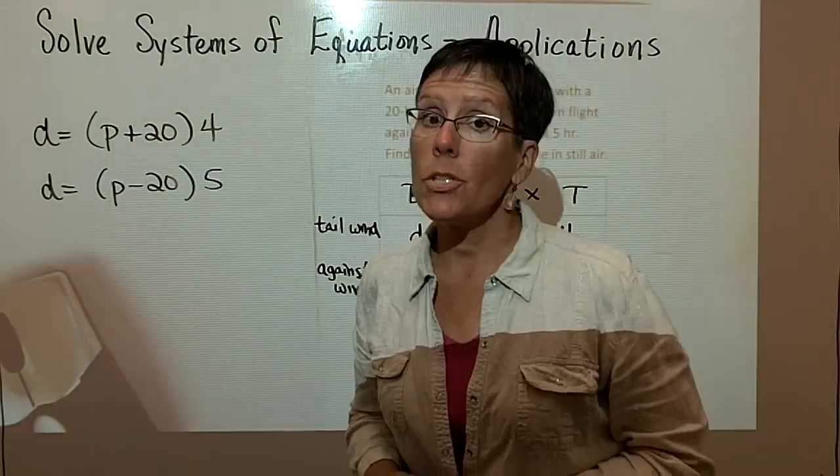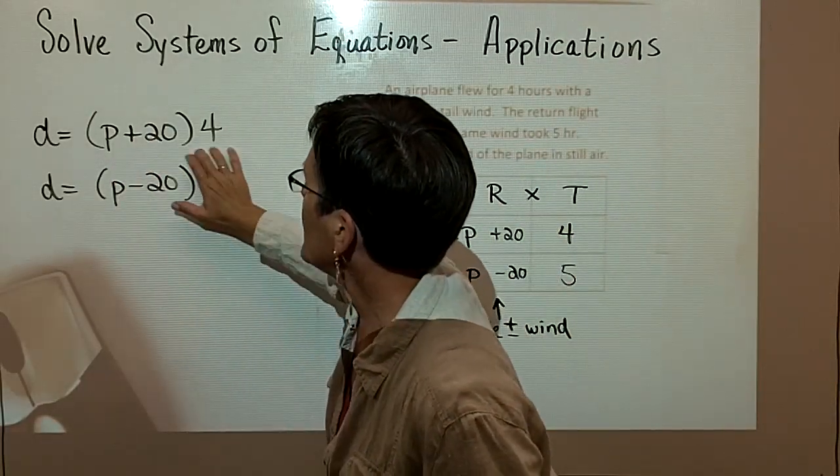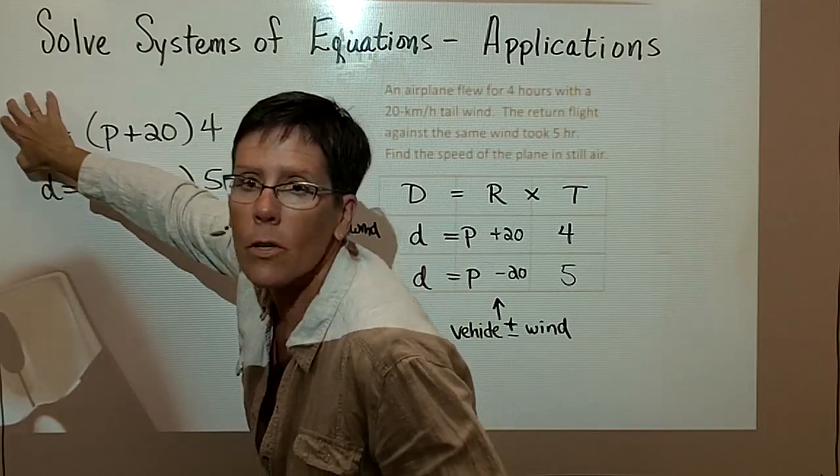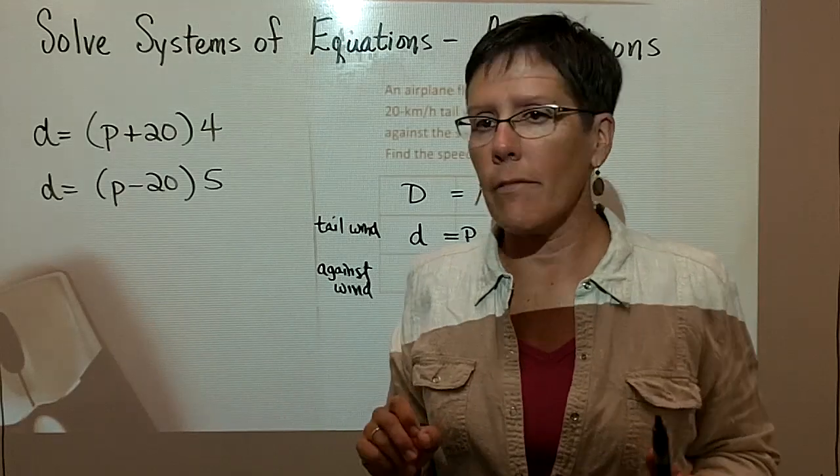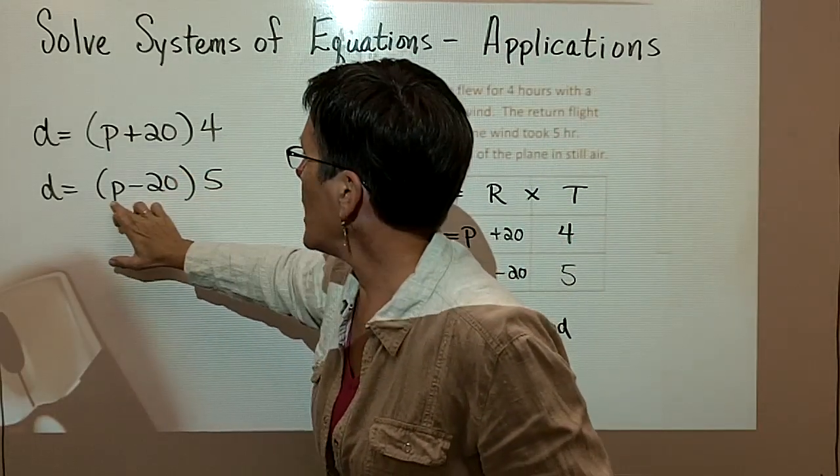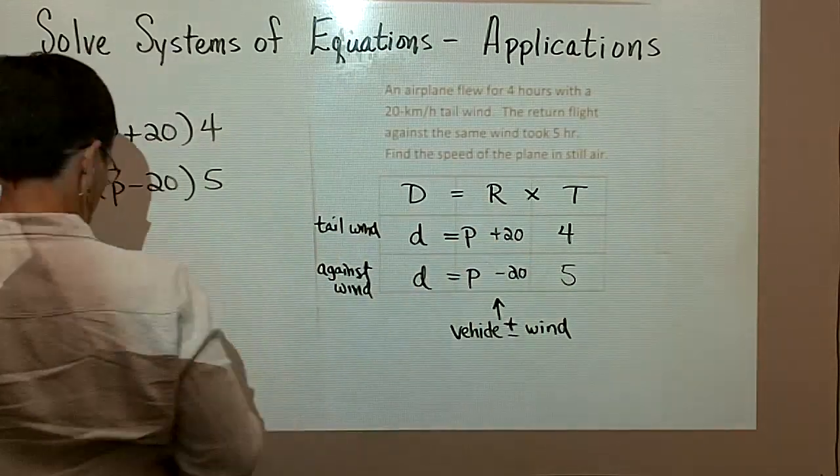I'm going to go ahead and use the substitution method to solve this problem. I'm going to take this whole piece right here and substitute it in over there. Since both of these expressions represent the distance that they travel. So I'm going to let this 5 times p minus 20 equal the 4 times p plus 20.